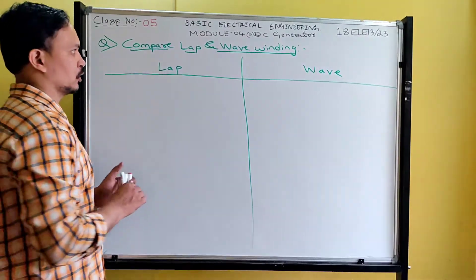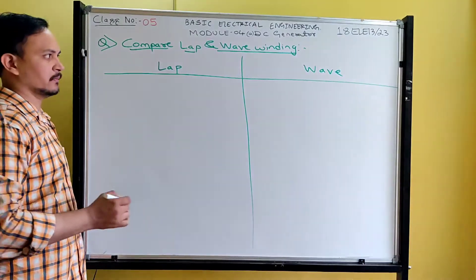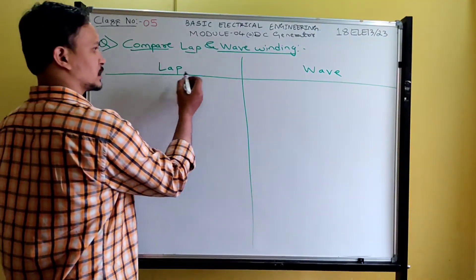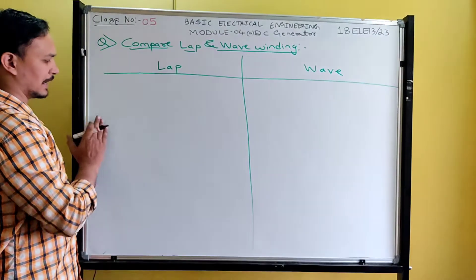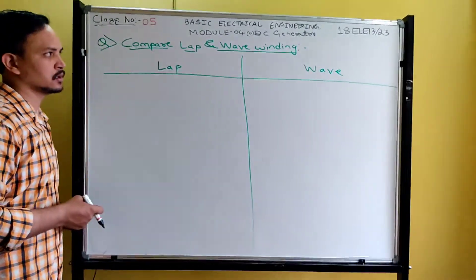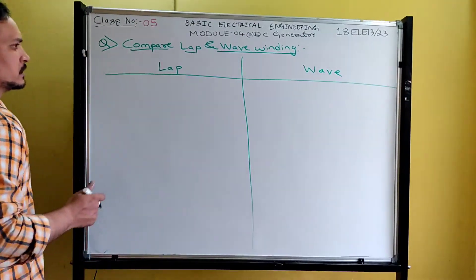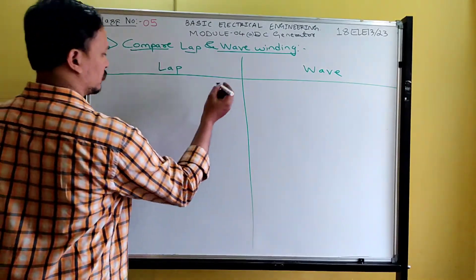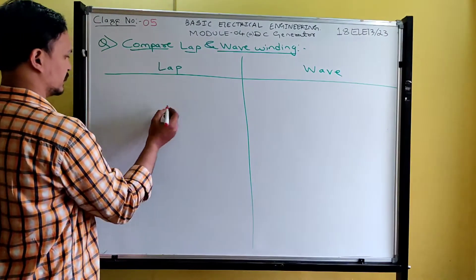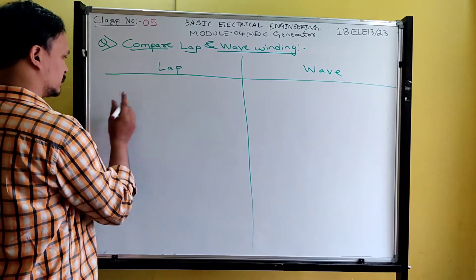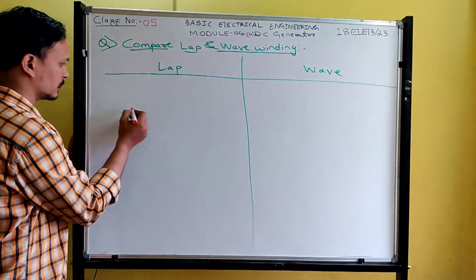Next topic is the comparison of lap and wave winding. This is very much important in university exams. They rarely ask this comparison for three to four marks. Let's see how the diagrams look for lap and wave windings.